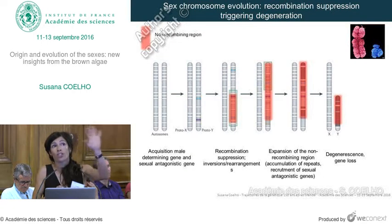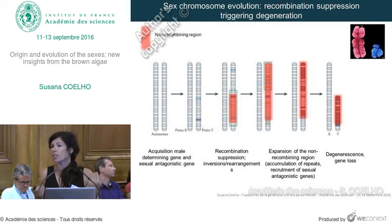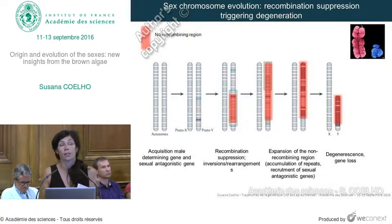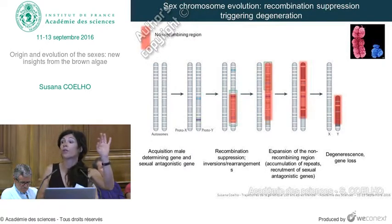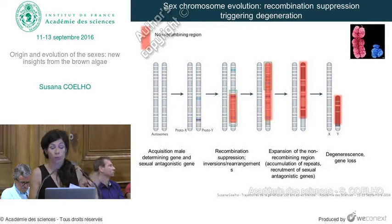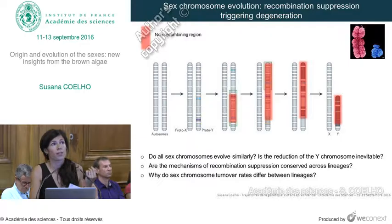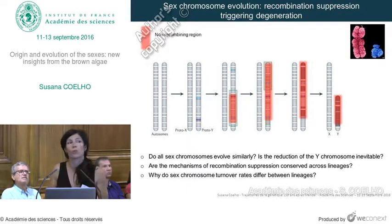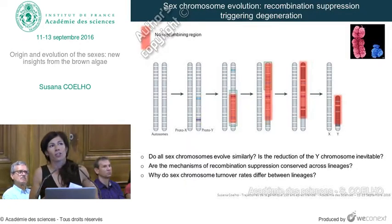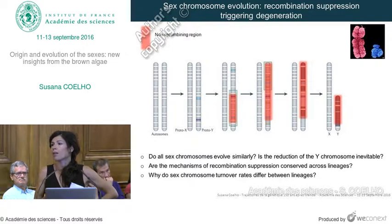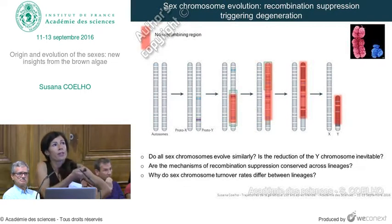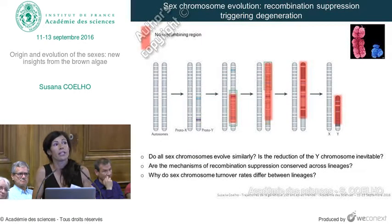Long term, this lack of recombination induces accumulation of junk DNA, and this region starts to degenerate with gene loss — that's why the Y chromosome is very small nowadays. The only genes left on the Y chromosome are those needed for the male sex. The X chromosome doesn't degenerate because in females it keeps recombining. But does this model work for all sex chromosomes? Is reduction in Y chromosome size inevitable?